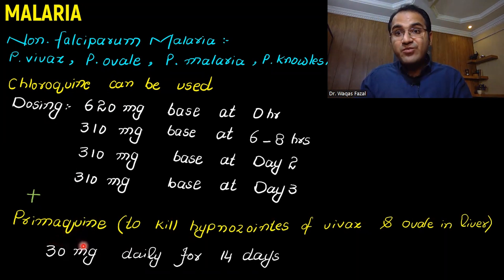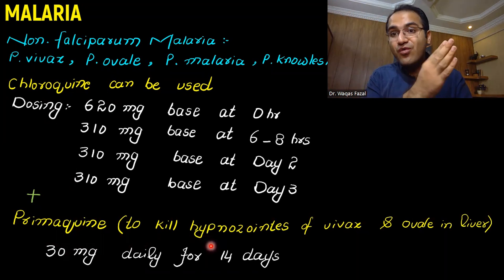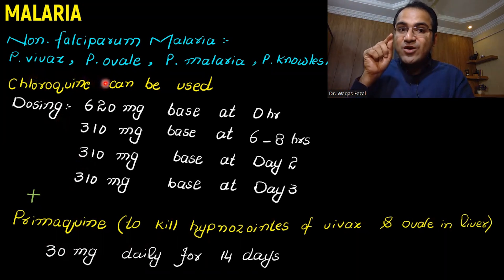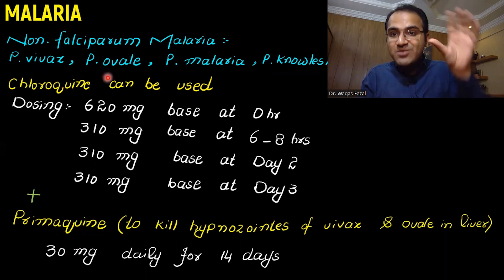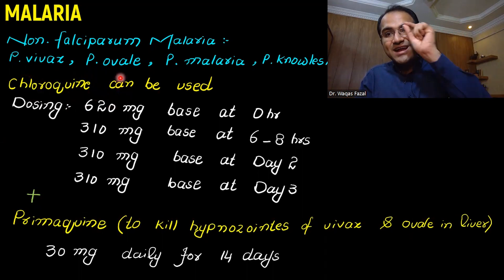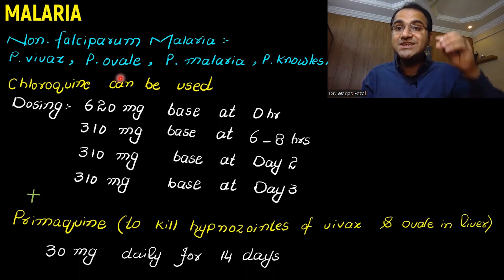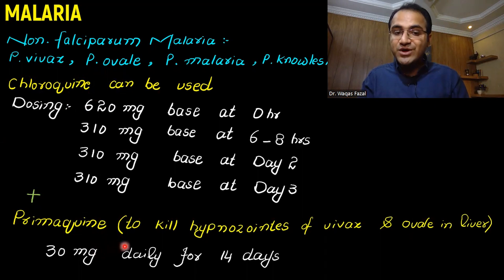Along with chloroquine, you give primaquine — a very important drug that kills the hypnozoites and schizonts present in the liver. Plasmodium vivax and ovale are the main culprits that stay hidden in the liver; even if you treat the blood stage with chloroquine, the patient can relapse weeks, months, or even years later. So you must kill the liver hypnozoites with primaquine, given at 30 mg daily for 14 days. A combination of chloroquine and primaquine can be given.